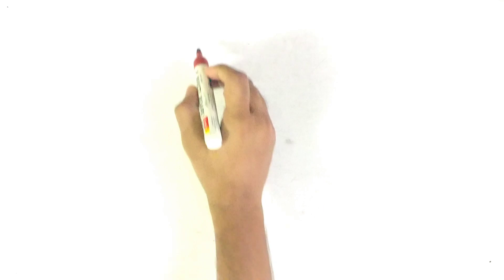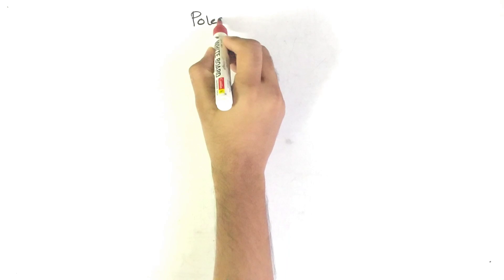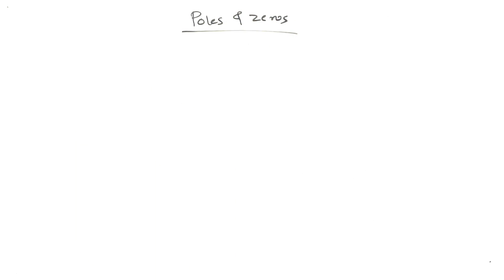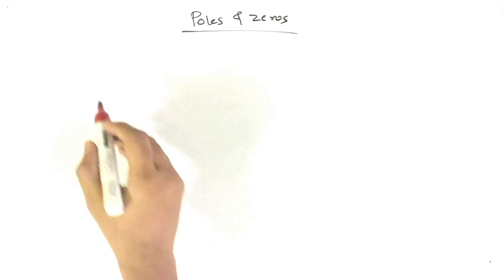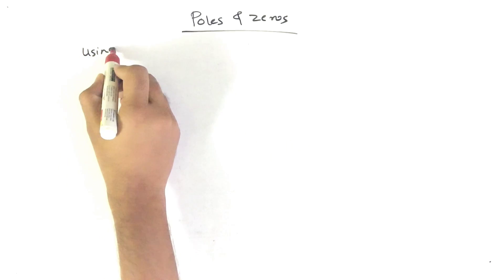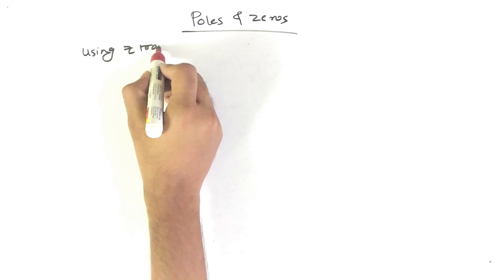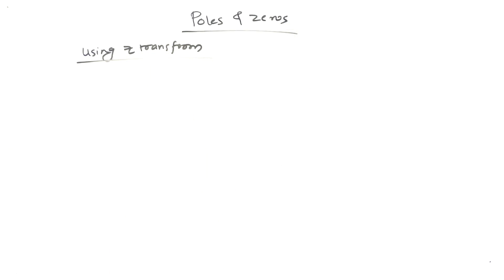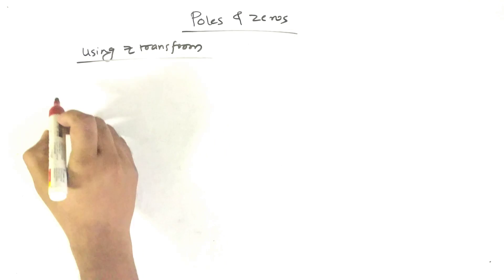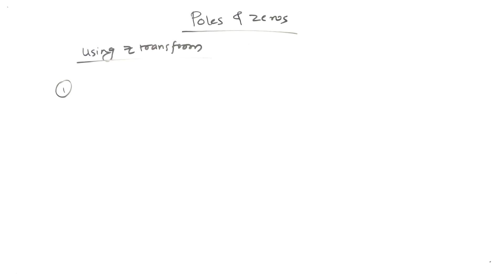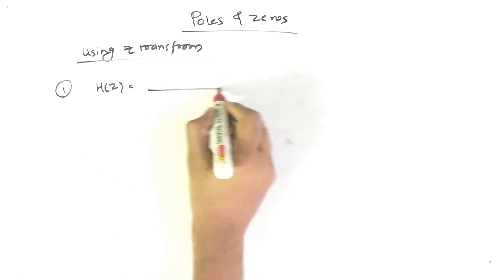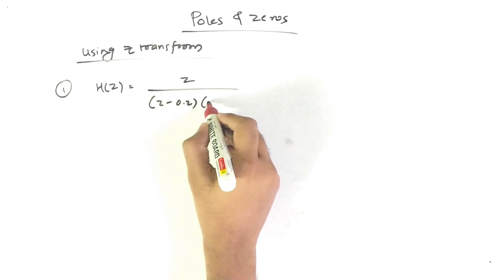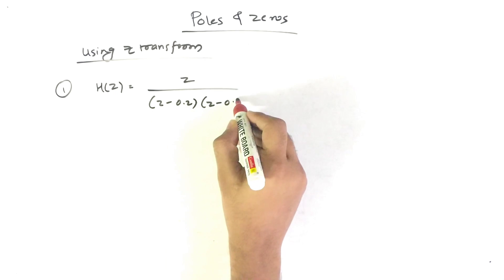Hello friends, today our topic is Poles and Zeros. For Poles and Zeros we will use Z transform. First we will see the meaning of Poles and Zeros. Suppose we have H of Z, and H of Z is Z divided by (Z minus 0.2) and (Z minus 0.6).